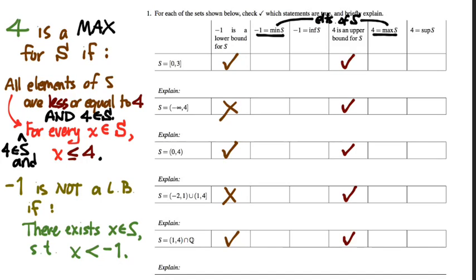Of sets 1 through 5, which ones have 4 as the maximum element? Sets 2 and 4, because we can see directly from the interval notation that 4 belongs to those sets. If 4 belongs to the set, then all I have to do is ask: is it an upper bound? And 4 was an upper bound for all five sets. So any of these five sets for which 4 is actually an element, 4 will also be the maximum element.